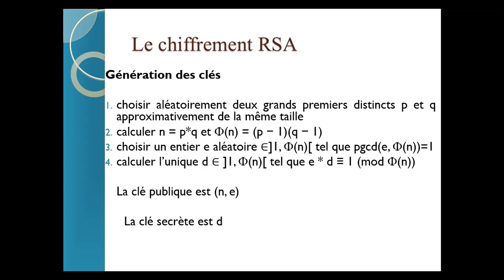Ce problème-là, c'est une remarque fondamentale qu'il faut garder. Pourquoi ? Parce que cette remarque est importante. Ça montre la robustesse de l'algorithme. Mathématiquement, si je te donne N, qui est le produit de deux facteurs premiers, c'est connu en mathématiques : ce problème, c'est de tirer P et Q à partir de N. Ça s'appelle le problème de factorisation.